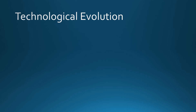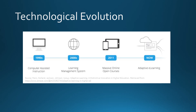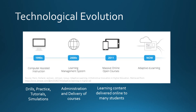In the decades after the introduction of AI, educational technologies continuously transformed. Computer-aided instruction emerged in the 1990s and offered drills and practices, tutorials, and simulation activities. In the early 2000s, learning management systems were implemented to administer and deliver educational opportunities through a secure centralized system. Massive online open courses gained popularity in 2011 by delivering learning content online to individuals anywhere, anytime. Today, adaptive e-learning technologies, largely driven by corporations and developers, provide a personalized technology and data-driven approach that responds and adapts to the individual learner's needs.